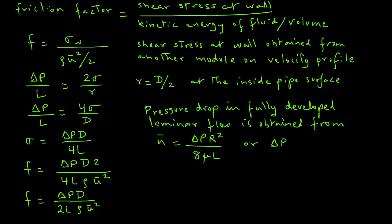We can rearrange that equation in terms of pressure drop as delta p equals 8 u bar mu L divided by R squared. Now we can take this expression for pressure drop and substitute that into our equation for friction factor. And we get F equals 8 u bar mu L divided by R squared times D divided by 2L rho u bar squared.